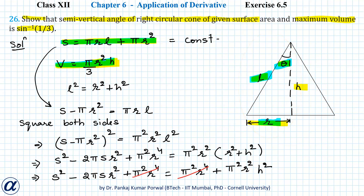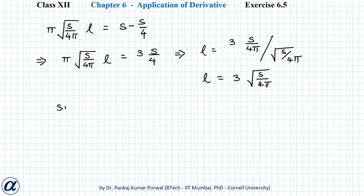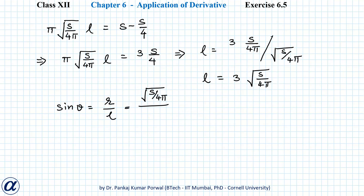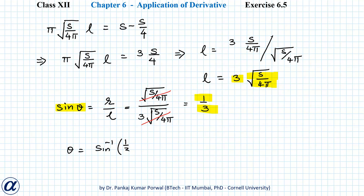From the right circular cone, sin θ = perpendicular/hypotenuse = r/l. So sin θ = √(S/4π) divided by 3√(S/4π). The √(S/4π) terms cancel, giving sin θ = 1/3, and therefore θ = sin⁻¹(1/3), which is what we wanted to show.